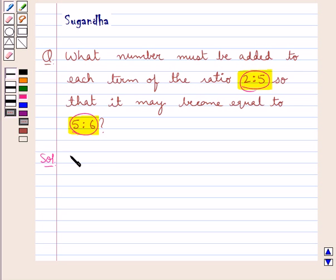So we suppose let x be added to each term of the ratio 2 is to 5.